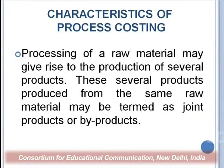Processing of raw material may give rise to the production of several products. These several products produced from the same raw material may be termed as joint products or by-products. For example, when processing crude oil, you get petrol, diesel, kerosene, gasoline, and various other products. All these — petrol, diesel, kerosene, gasoline — are termed as joint products. So while processing, you may get joint products.